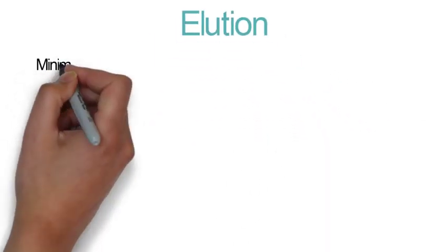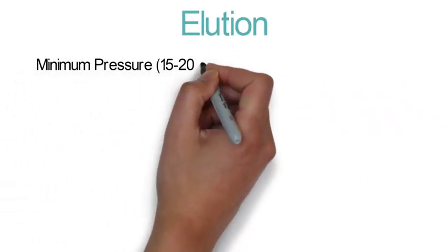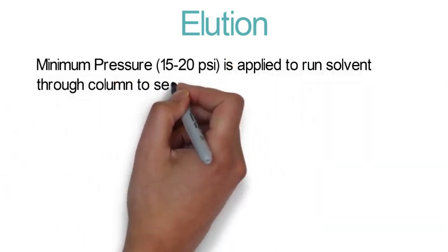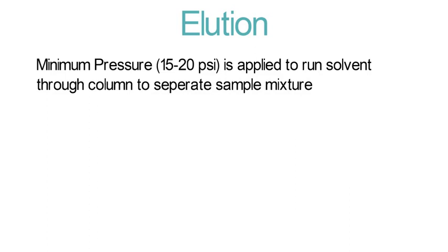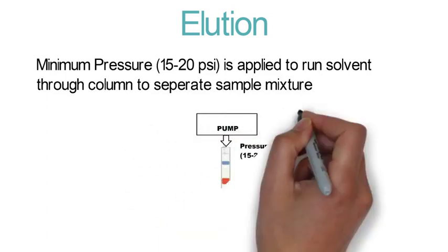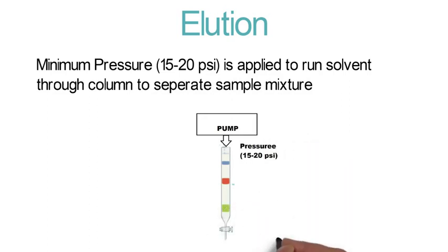Next process is elution. Minimum pressure up to 15 to 20 psi has been applied to run the solvent through the column to separate the sample mixture. It utilizes a pump to create pressure.